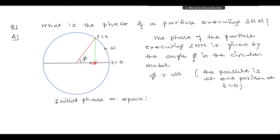Suppose when the oscillating particle is here you have started measuring time — you have a stopwatch in your hand and you have started the stopwatch. When the oscillating particle is neither at the end position nor at the mean position when you have started measuring time, in such case the particle will have an initial phase.